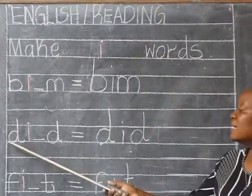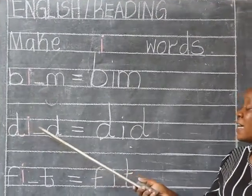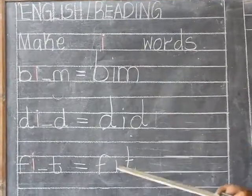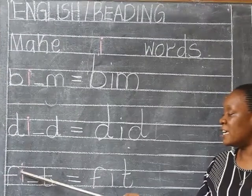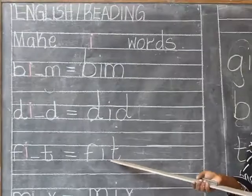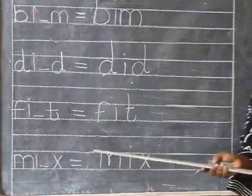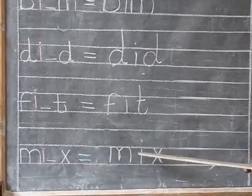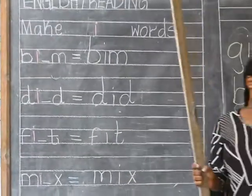When you have du, i, du — du, i, du — you'll get the word did. When you have f, i, tu — f, i, tu — you're going to get a three-letter word which you read as fits. Another word is mix. How do you read the word mix? It's m, i, tss — m, i, tss — and you get the word mix.